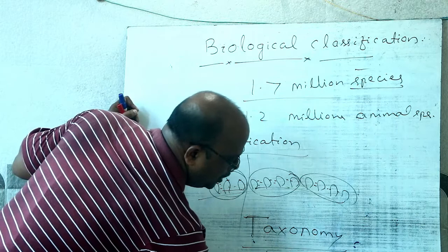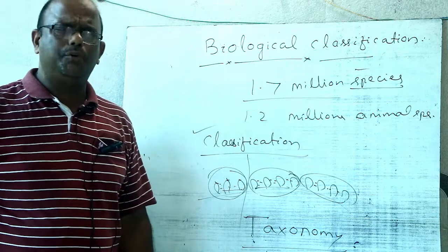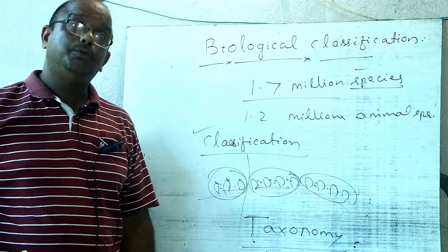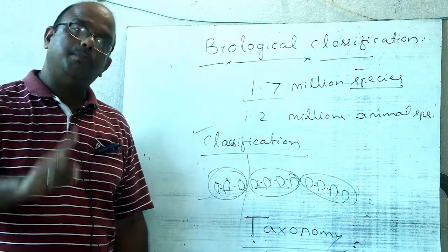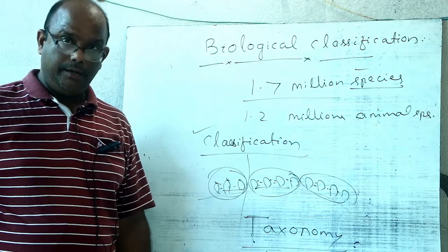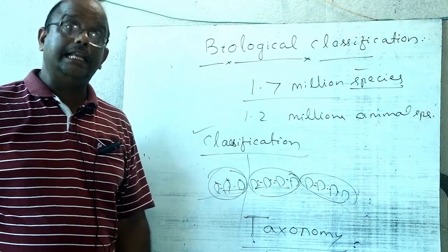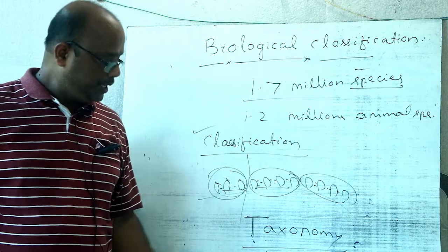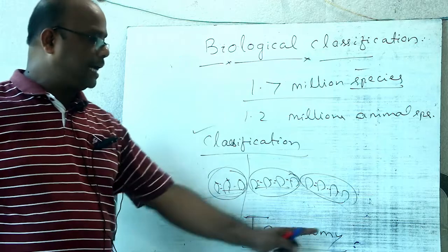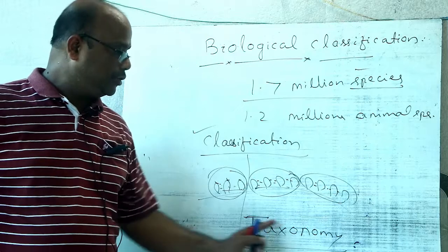Carolus Linnaeus has made much more contribution towards taxonomy. He classified plants into 24 classes and animals into 5 different classes. He wrote the books Systema Naturae, Species Plantarum, and Genera Plantarum. He is commonly known as the father of classification or the father of taxonomy.